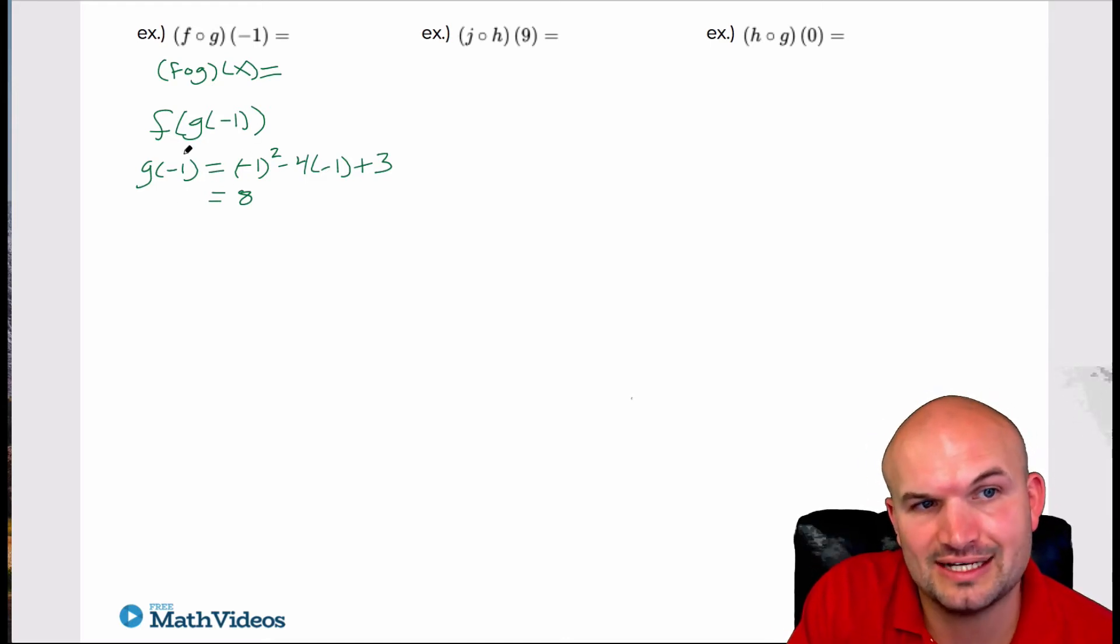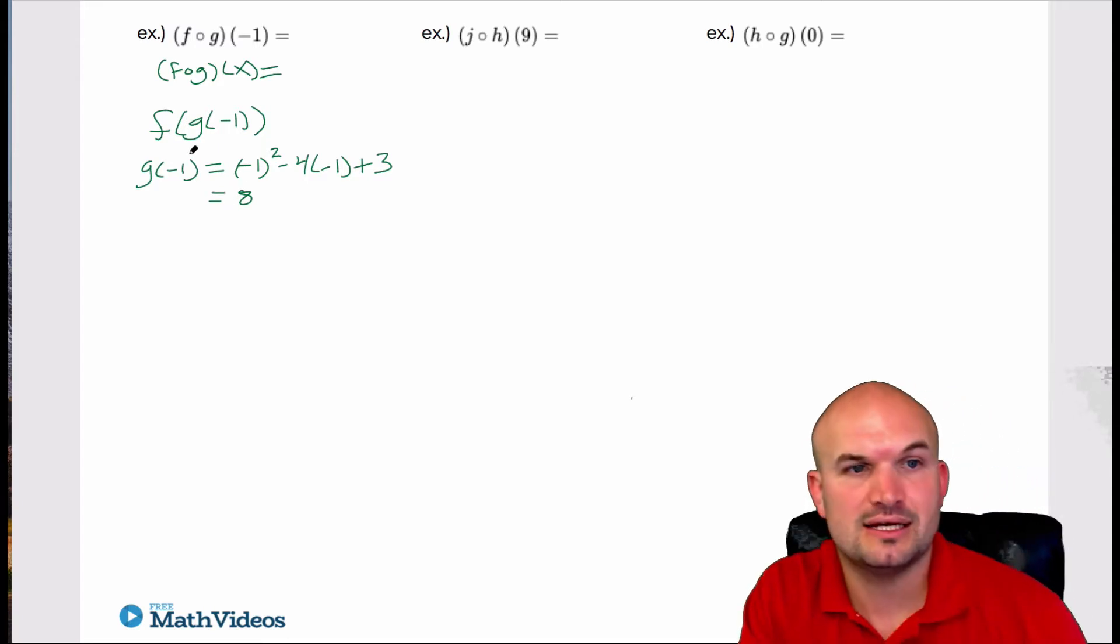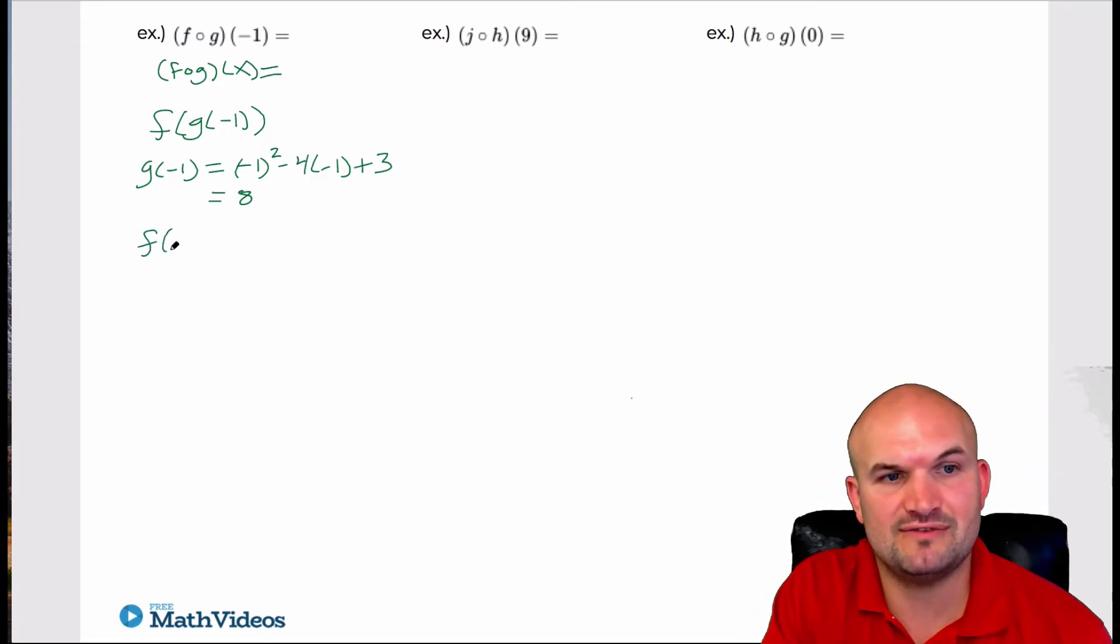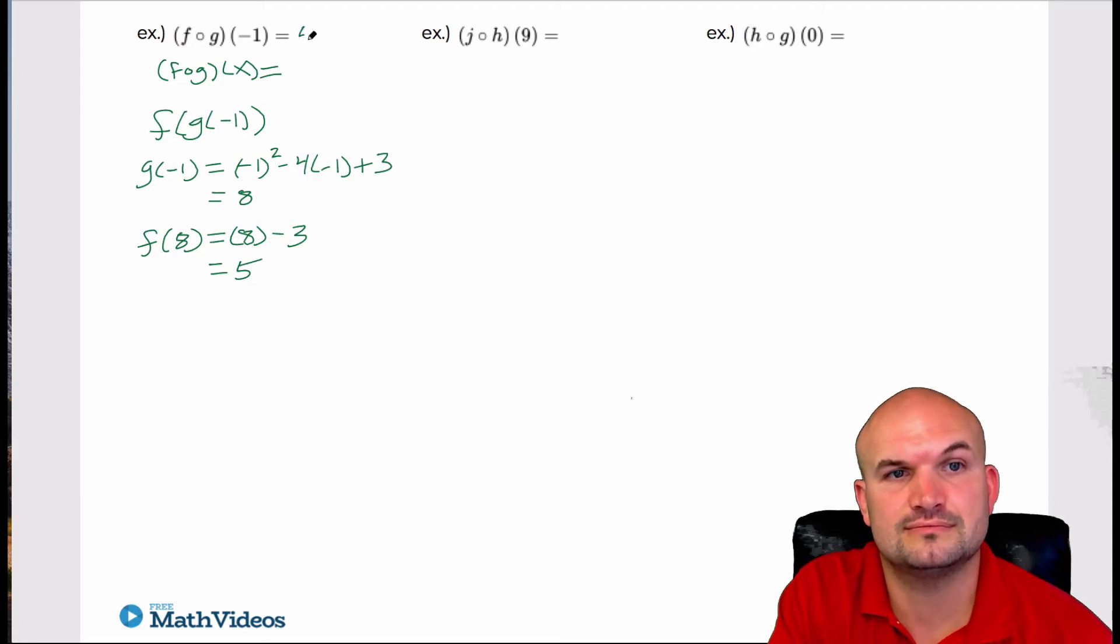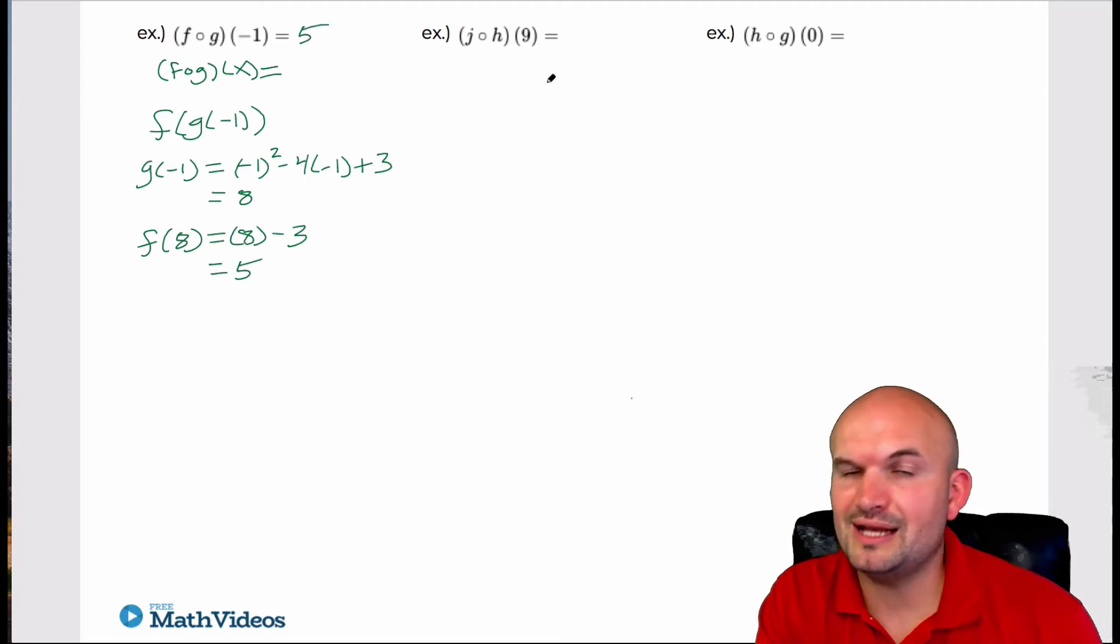And now I can just replace g of negative one with eight. So by doing that, I'm now really just evaluating f of eight. So f of eight is eight minus three. So eight minus three is just equal to five. Okay, so kind of doing the same thing here.